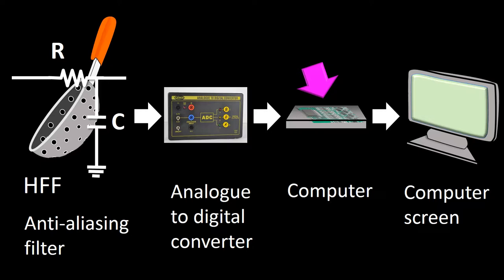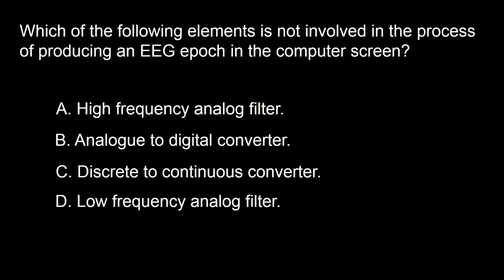Ultimately, the computer sends addresses to the screen matrix with two types of information. One type arises directly from the processing of data points gathered by the analog-to-digital converter. The second type is generated by the discrete to continuous converter using a zero-order hold interpolation function. At the screen matrix, these addresses induce activation of the appropriate pixels — minute areas of illumination that can generate different colors by flickering at different rates.